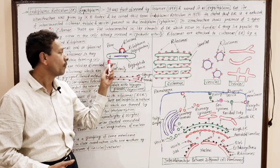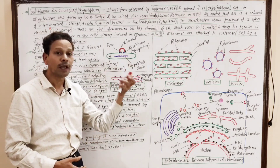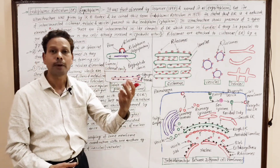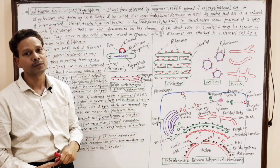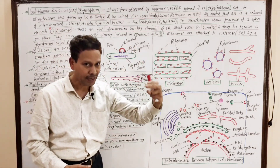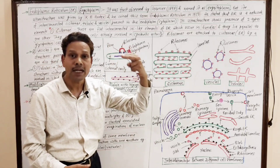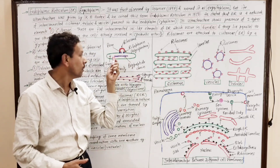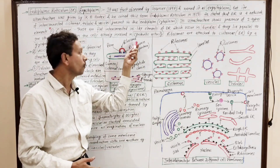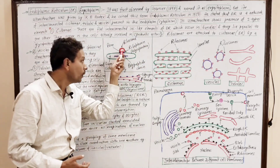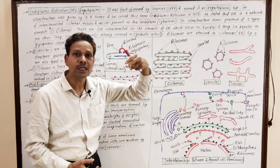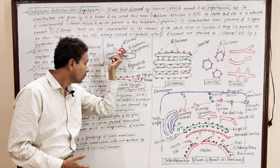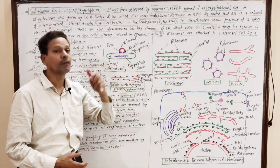The cisternal cavity or lumen space contains a semi-fluid matrix. The newly formed polypeptide chain gets packed here. These 80S ribosomes get associated with the cisterna on its surface by a glycoprotein — ribophorin. Through a pore, the ribosome synthesizes a polypeptide chain, a protein chain, that gets transferred into the lumen of the cisterna.